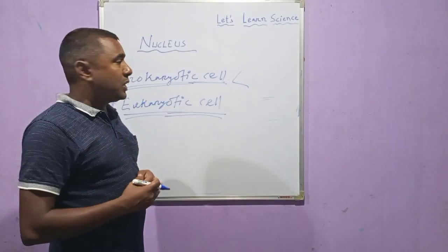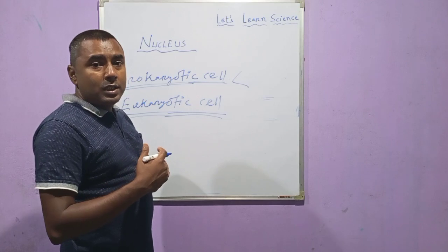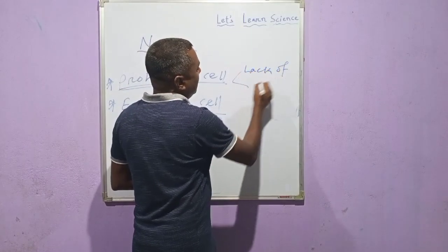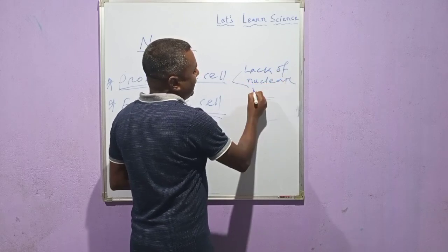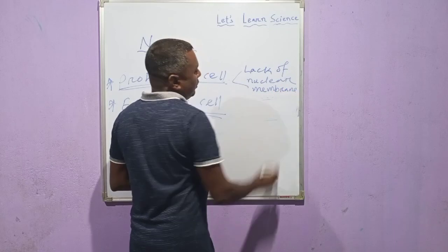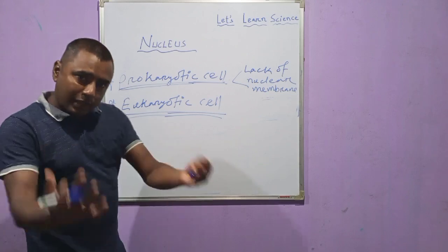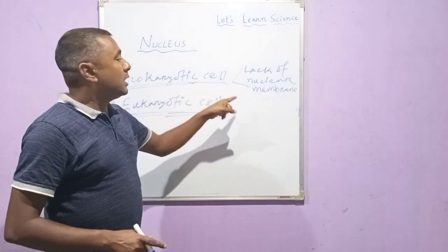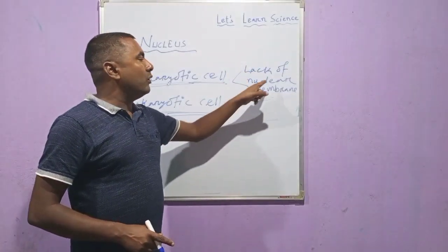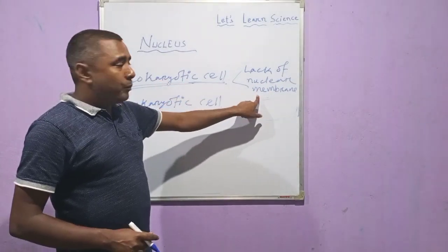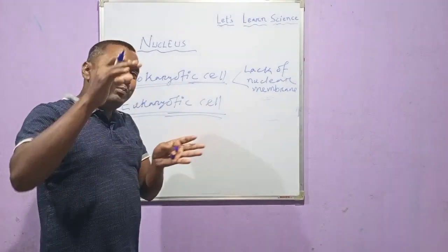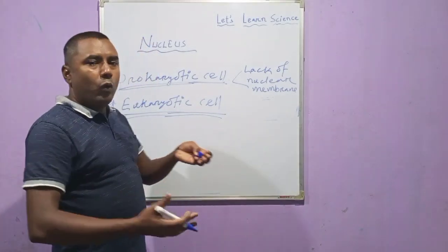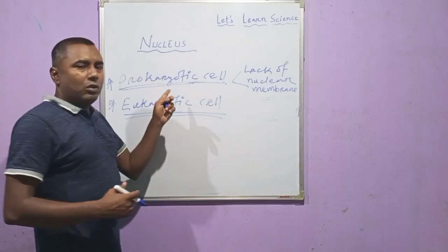In the prokaryotic cell, the nucleus that is present is without a nuclear membrane — it lacks a nuclear membrane. As we know, the nucleus has a double layer of membrane: an outer membrane and an inner membrane. But in the prokaryotic cell, the nucleus lacks this nuclear membrane, so it is not distinct — it is at a primitive or primary state. The nucleus is not well-defined in prokaryotic cells.